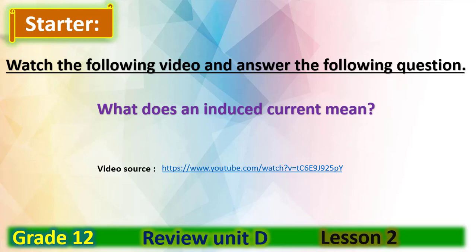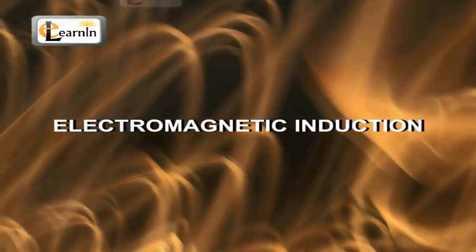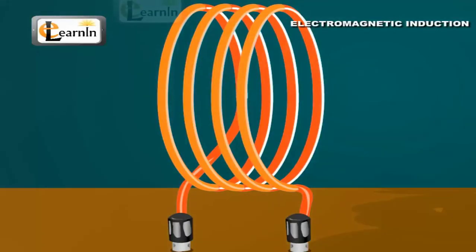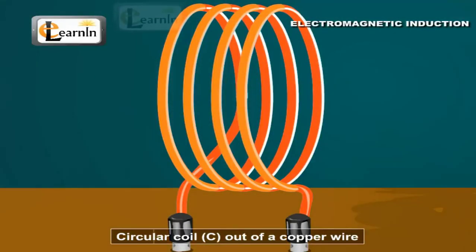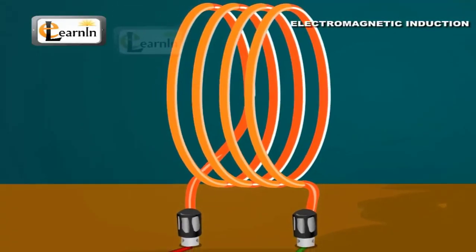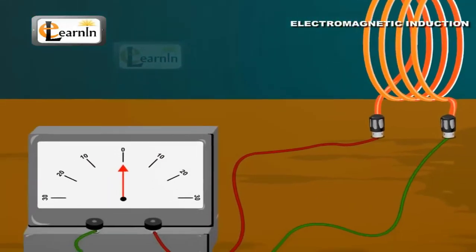For our starter today, watch the following video and answer the following question: what does an induced current mean? Watch the video carefully please. The video is about electromagnetic induction. Prepare a circular coil out of copper wire and connect the two ends of this coil to the two terminals of a sensitive galvanometer with the scale having zero at the center.